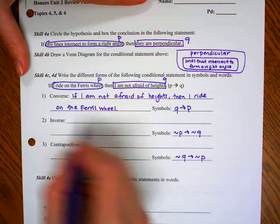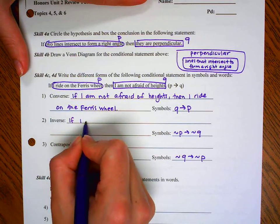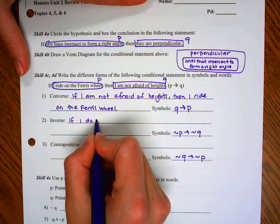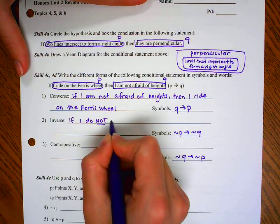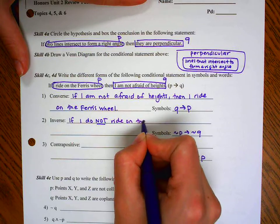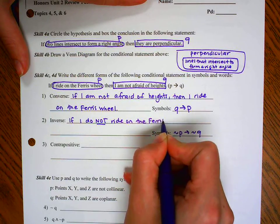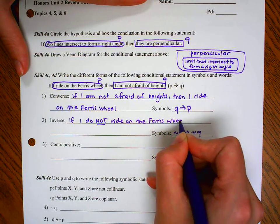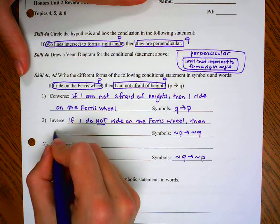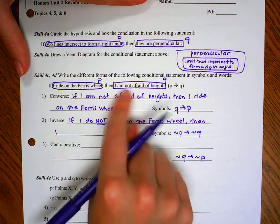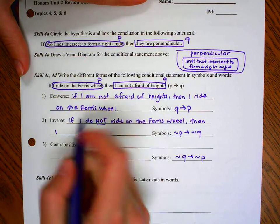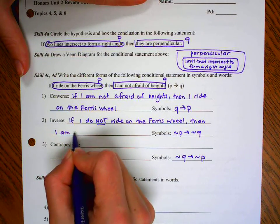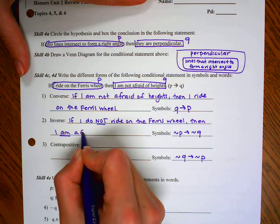Inverse, the negation of P, so if I do not ride on the Ferris wheel, then we need a negation of Q. So instead of I am not afraid of heights, we're going to say I am afraid of heights.